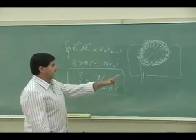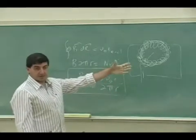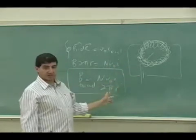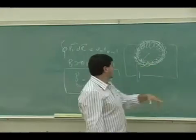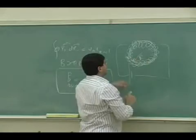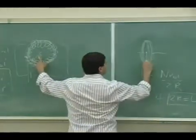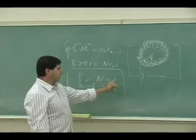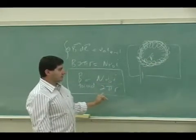So if you had a coil of a certain number of turns and a toroid of the same number of turns, let's say the radius was the same. Let's say the radius of this was the same. So this r, let's say, was the same as this r. So if the radius was the same, n was the same, i was the same, which one would have the stronger B field?